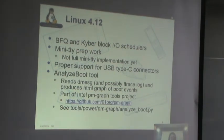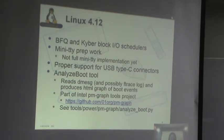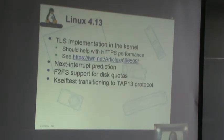In kernel 4.12, we saw some new block I/O schedulers and some work on the mini TTY code, though it doesn't look like that went anywhere. There was proper support for USB Type-C connectors, and a new Analyze Boot tool that reads dmesg and possibly ftrace logs and produces a nice graph of boot events. In 4.13, we started to see the first parts of the TLS transport layer security implementation inside the kernel, which should help with HTTPS performance.